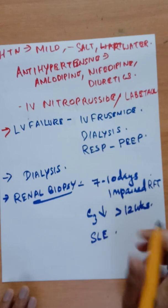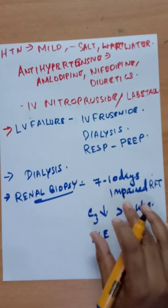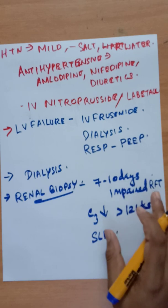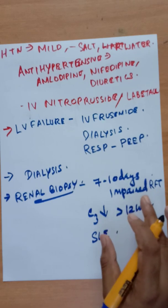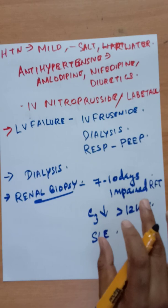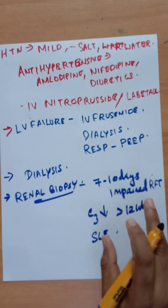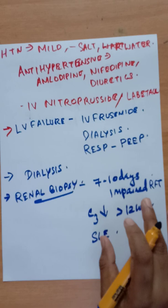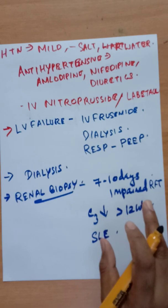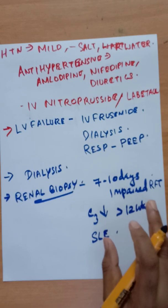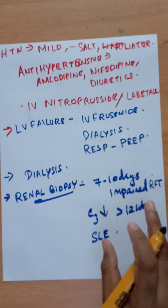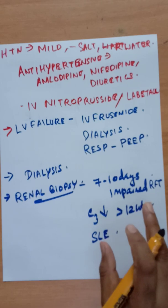Regarding outcome and prognosis: post-streptococcal glomerulonephritis has an excellent prognosis in childhood. Symptoms begin to resolve in the first week. Gross hematuria and significant proteinuria disappear within 2 weeks, while microscopic hematuria and slight proteinuria may persist for several months. Hypertension subsides within the first 2–3 weeks.